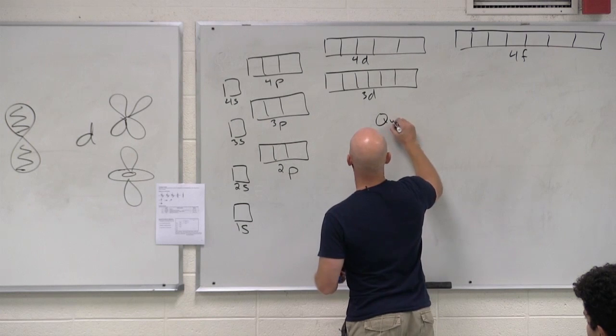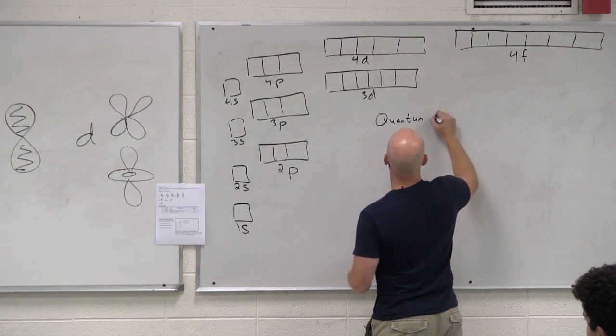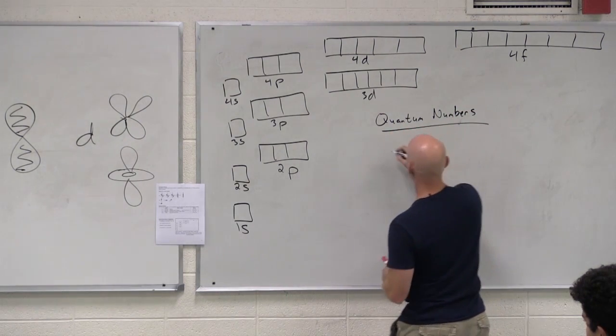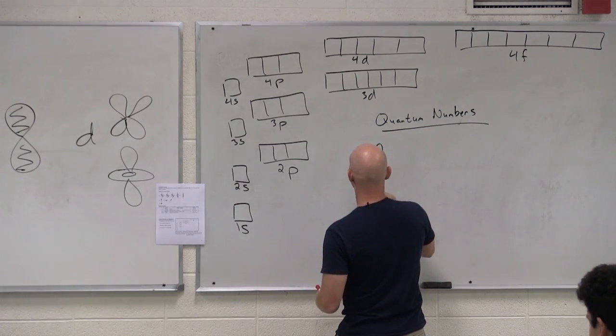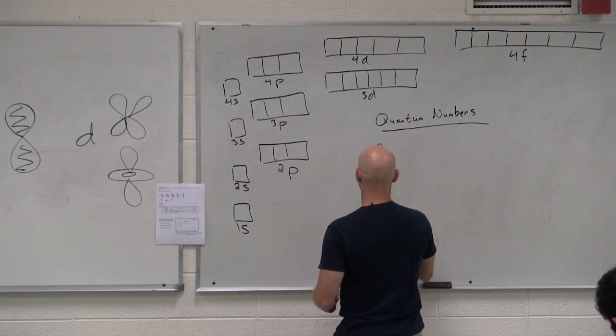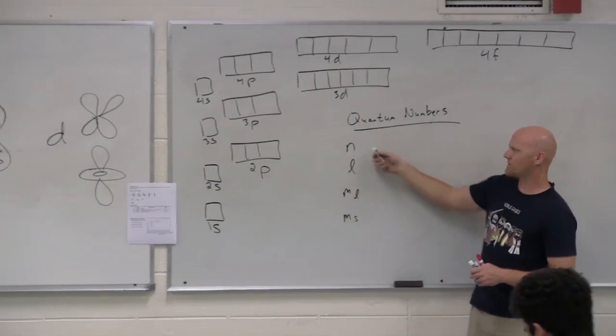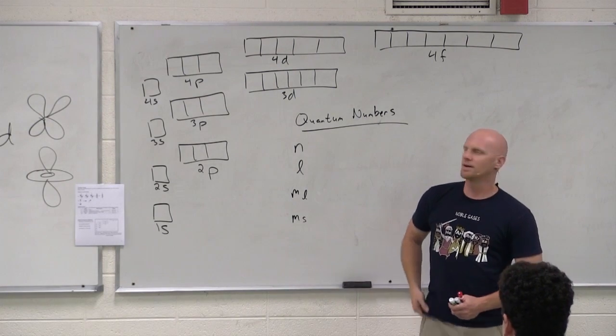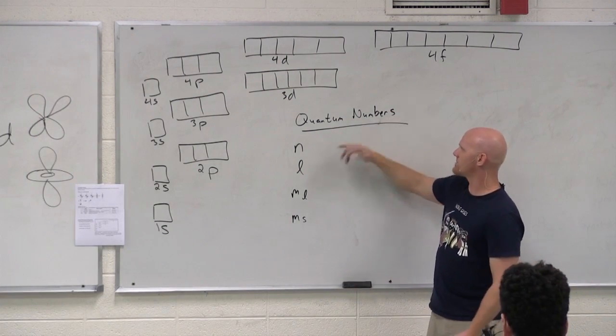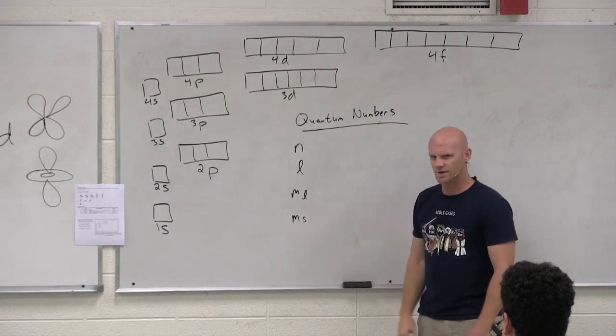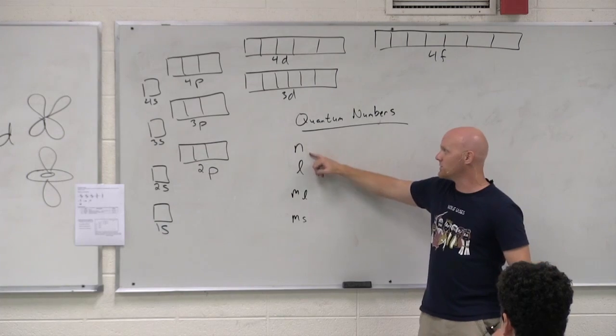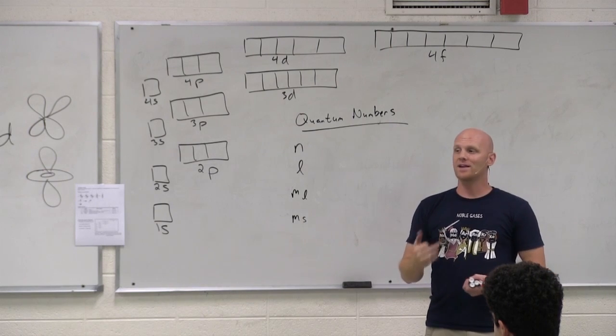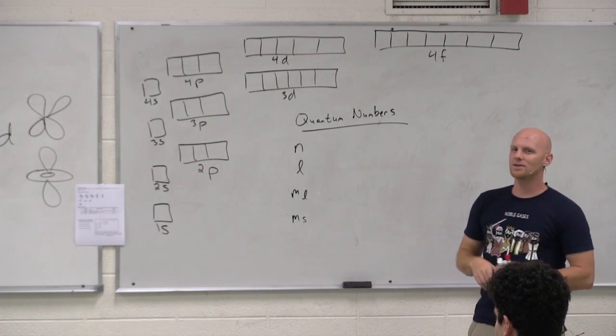Turns out these quantum numbers, we represent them with four letters: N, L, M sub L, M sub S. Notice we often represent numbers with letters, right? Like pi is a letter but it represents a number and things of a sort. So in this case, we call them quantum numbers that often throw students, but you call them numbers and then there are letters. What's going on? So sorry, that's just the way it is. These are the symbols that represent the four different quantum numbers. You're supposed to know their names, you're supposed to know what they tell you, as well as their range of values possible. But again, they're kind of like an electron's address.